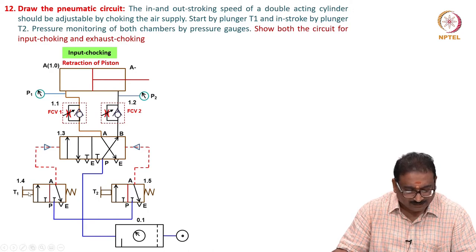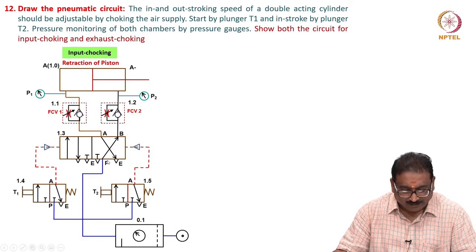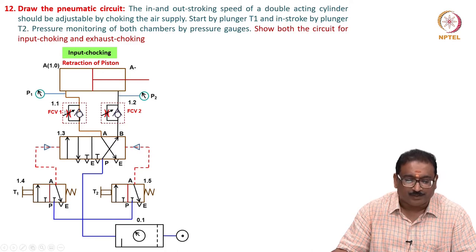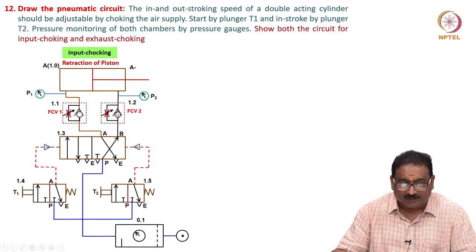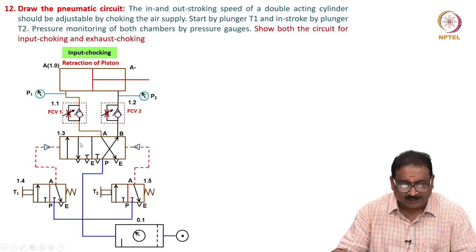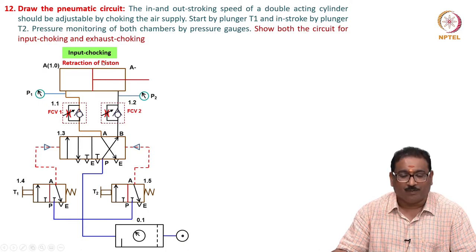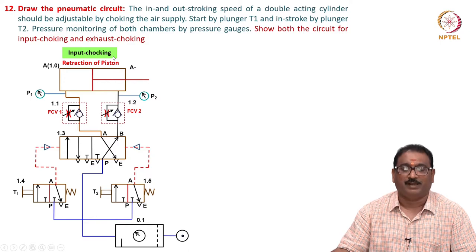For inlet choking: if you press T1, the air comes here and actuates. Then it connects here and enters. It will not pass through the check valve - it will only pass through the metered orifice to the head side. Return flow will not pass through the metered orifice - it lifts the check valve ball and goes to atmosphere. Meaning, input choking is taking place.